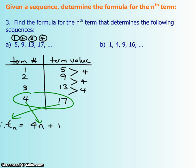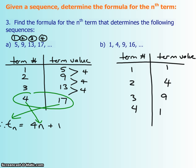Let's try it out with the other one. Set up your table again. So 1, 2, 3, 4 and then our term values are 1, 4, 9, and 16.